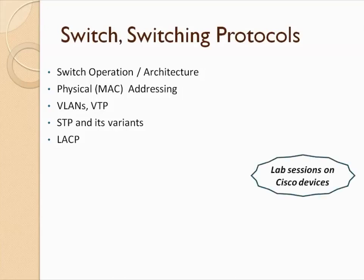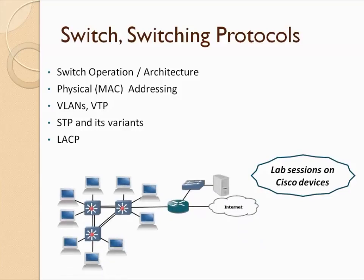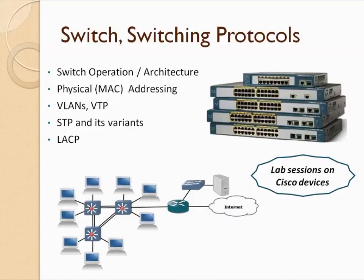Then I'll jump into switching protocols. I'll explain what a switch is, how it evolved, the history where hubs and bridges played a role earlier, and how switches replaced them. I'll cover switch operation, its internal architecture, and how it forwards packets based on layer two addressing. Then I'll get into protocols like VLANs, Virtual Trunking Protocol — where you create VLANs across switches using a trunk port — and then Spanning Tree Protocol.